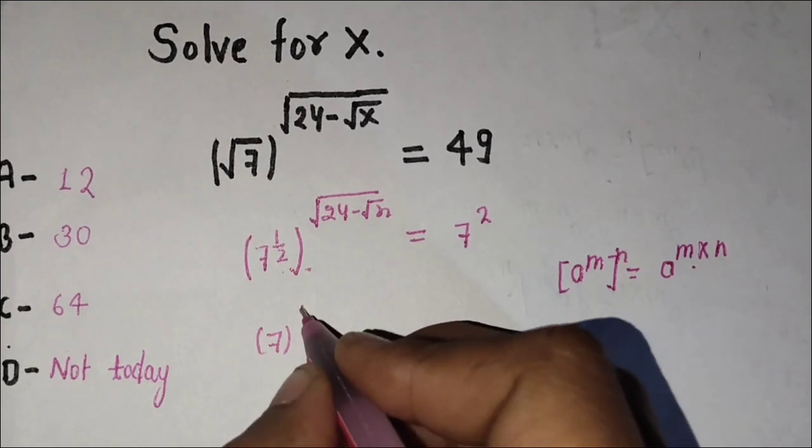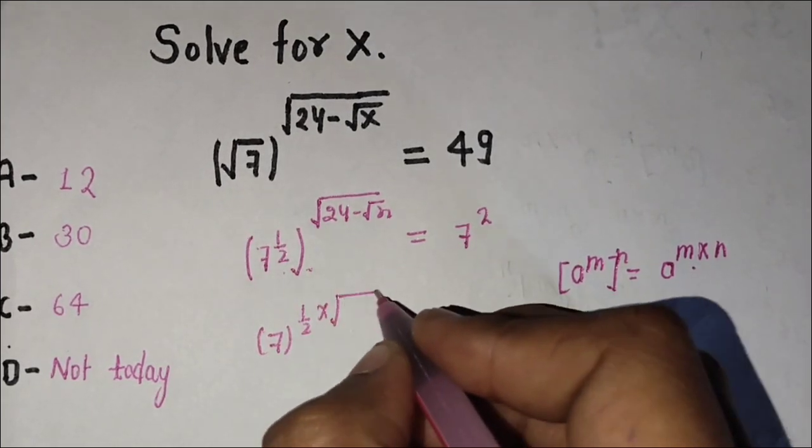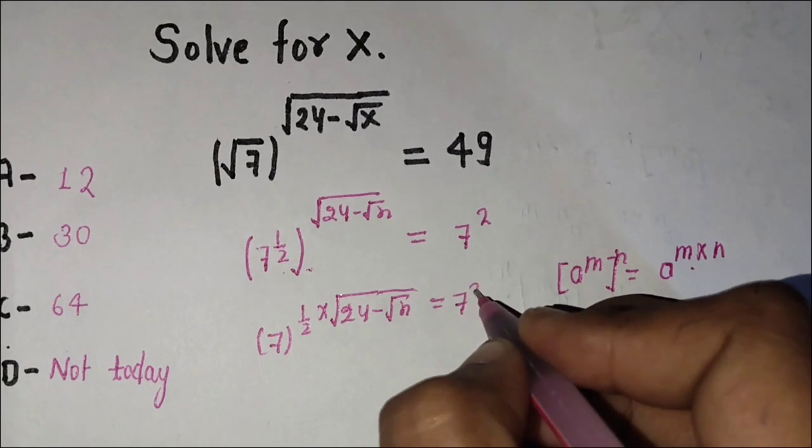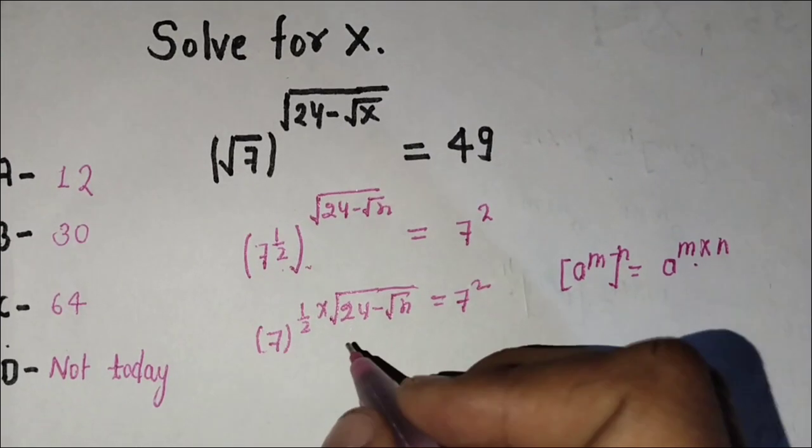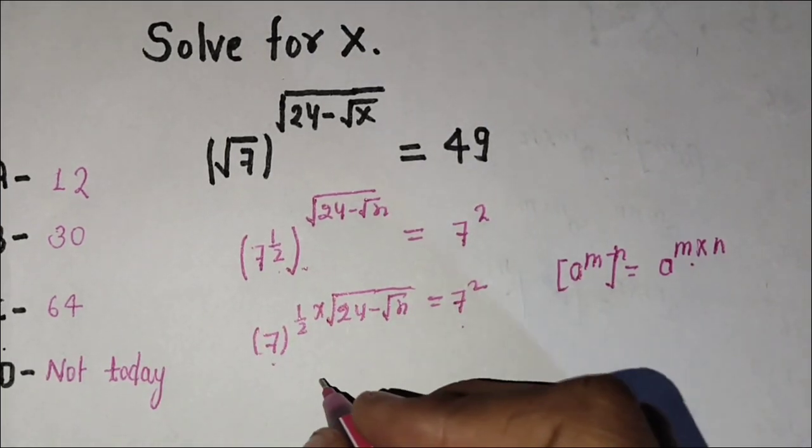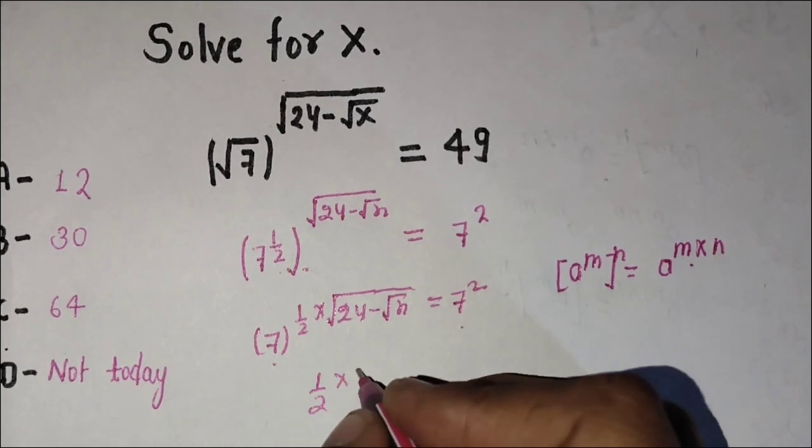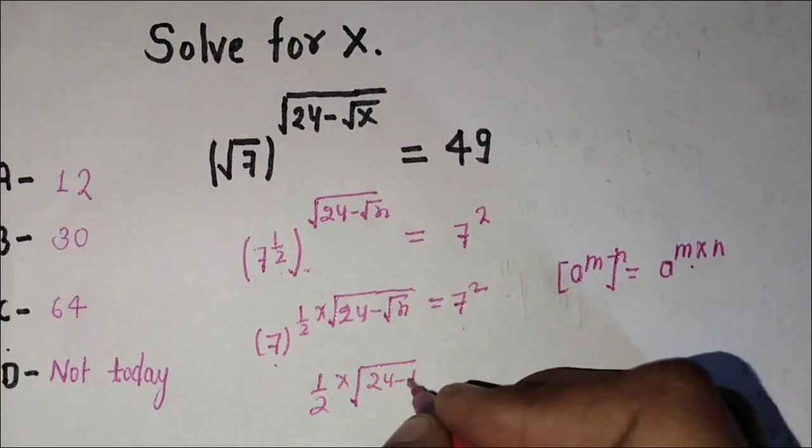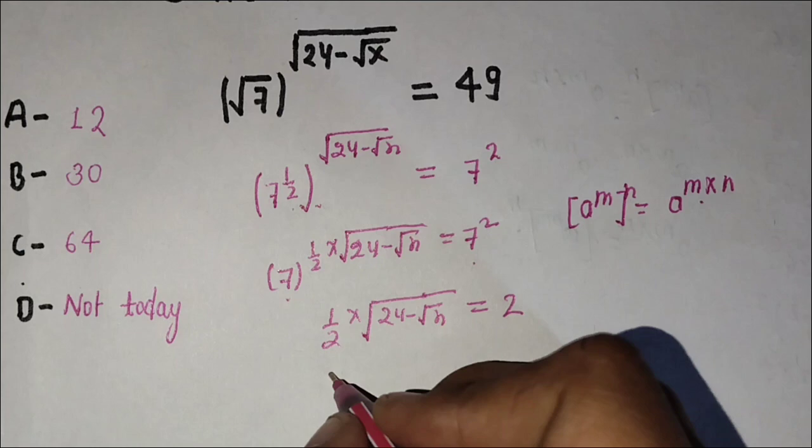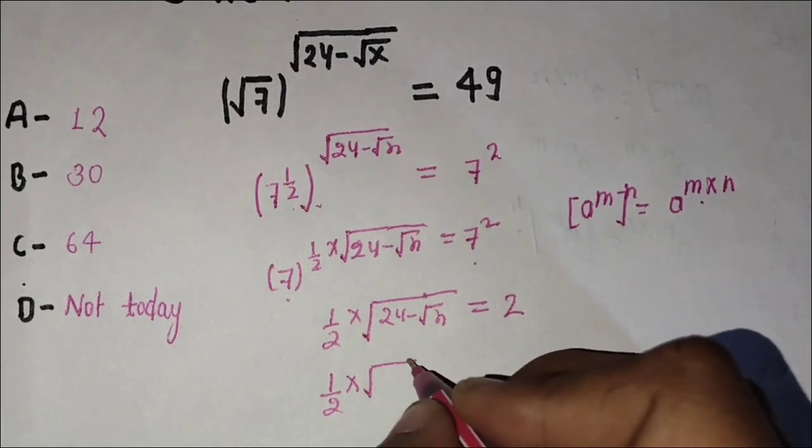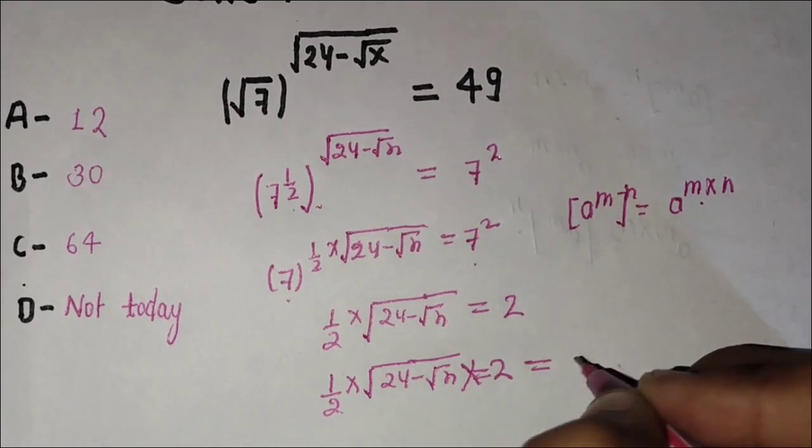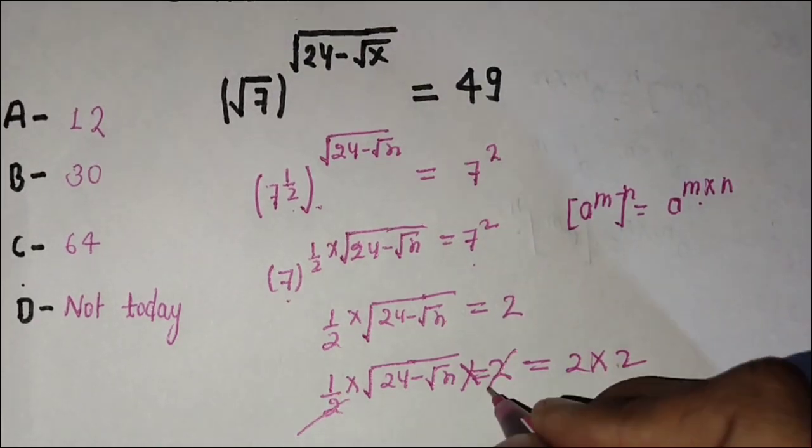So 7 to the power 1/2 times root of 24 minus root x equals 7 squared. The left base and right base are the same, so the powers must be equal. Multiply both sides by 2, and this 1/2 will cancel.